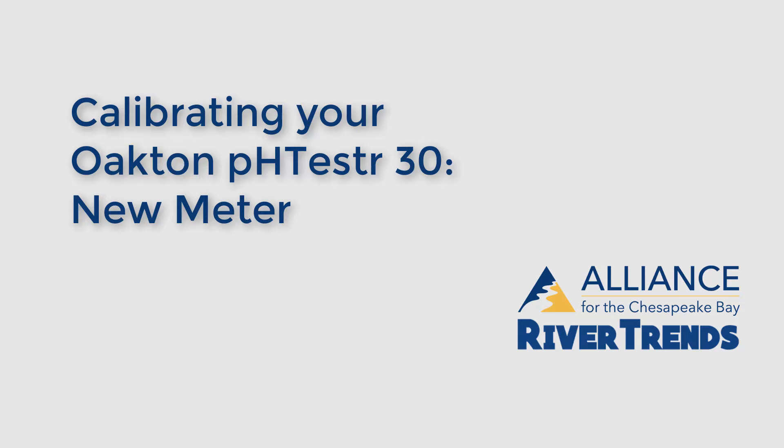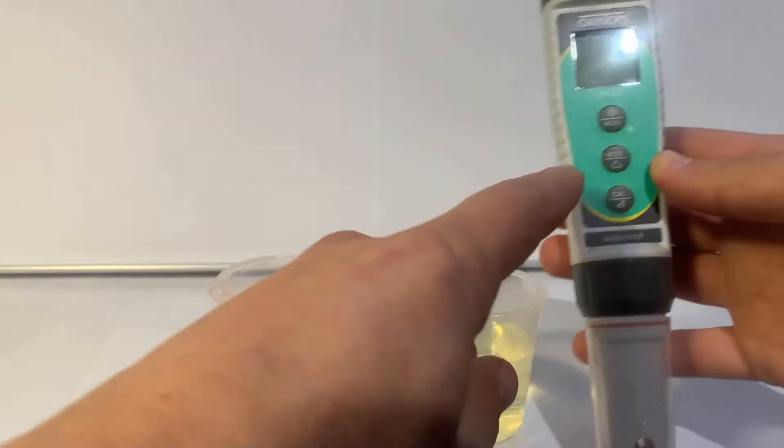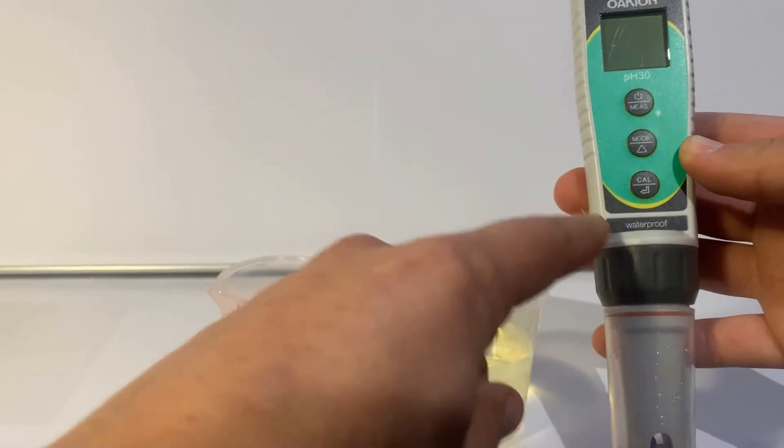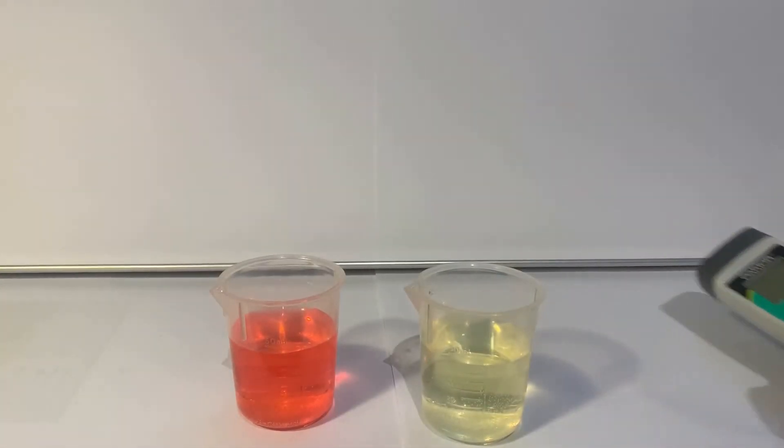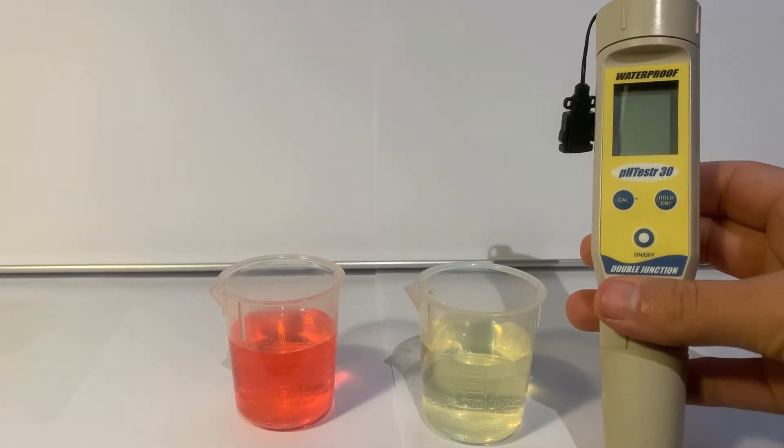This video will cover how to calibrate and use the new version of the Oakden PH30 tester, which has three vertical buttons on the front of the meter. If you're using the old meter with the buttons that form a triangle, use the video labeled older meter on the River Trends resource page.